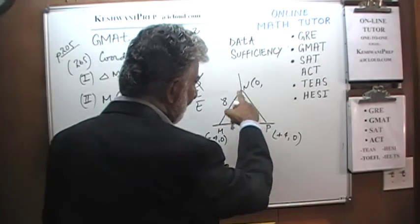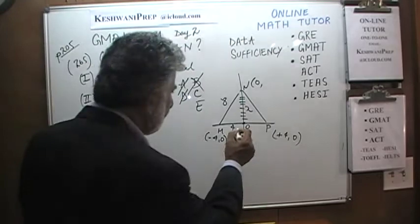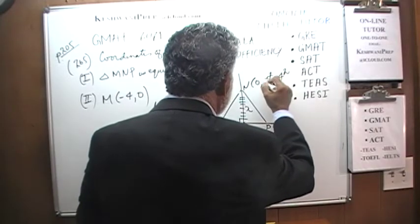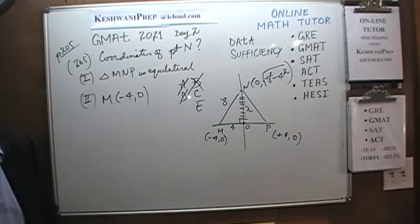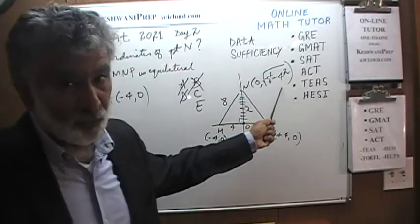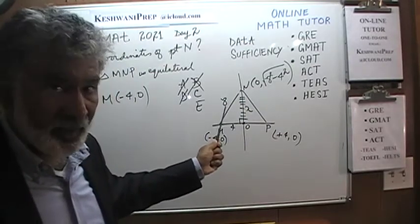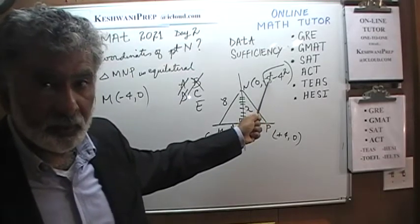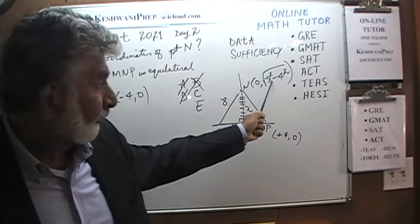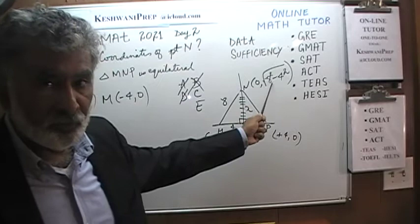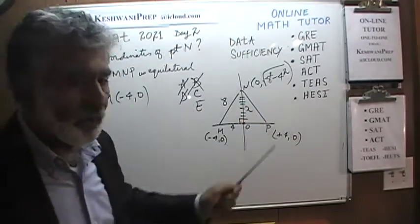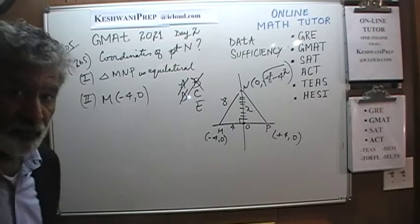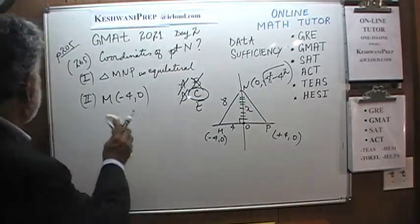Whatever that height works out to be, that is the y-coordinate of point N. We can very easily figure it out. We simply have to be able to recognize that in a right-angle triangle, if we know two sides we can figure out the third. We do not have to actually compute it — that was a waste of time to demonstrate. Putting the two statements together, it does work. The answer is C.